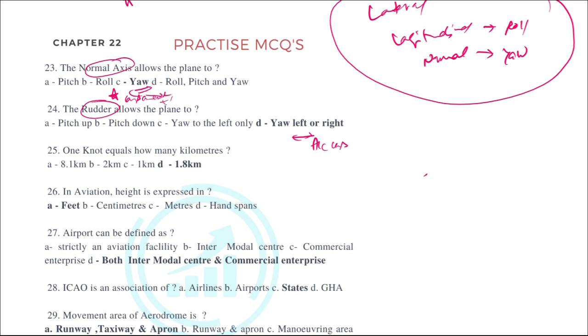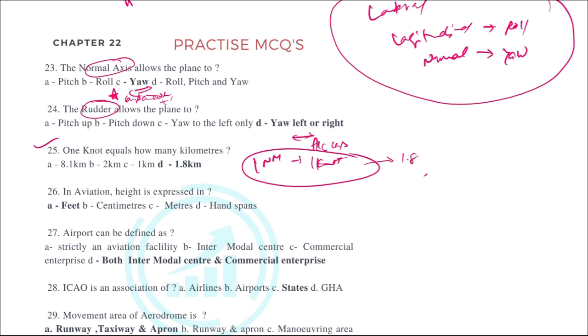One knot, which is one nautical mile — the unit normally used in aviation — equals 1.8 kilometers distance. This should be remembered; it is a must-know fact.